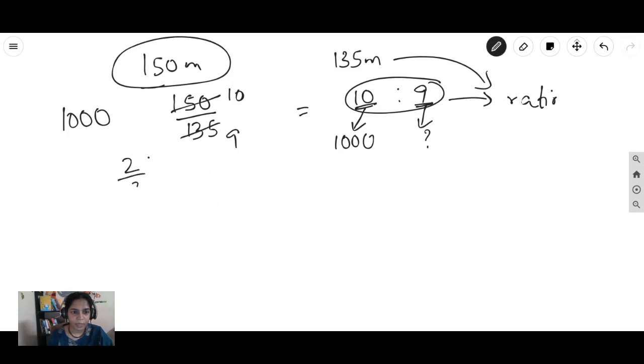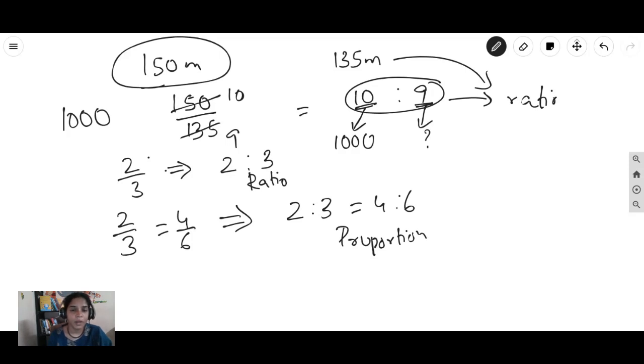2 by 3 can be written as 2 is to 3. Now 2 by 3 is equal to 4 by 6. Equal in fraction. Now that can be written as 2 is to 3 is equal to 4 is to 6. So writing the equivalent fraction is called proportion and writing the fraction in another form is called as ratio. Simple. So whenever you have got a ratio, change it into fraction and do the calculation. Whenever you have got a proportion, change it into an equivalent fraction kind of a thing and then solve the problem.